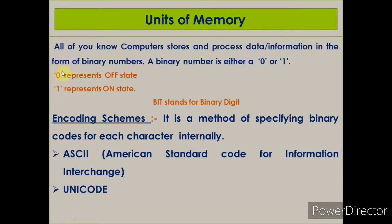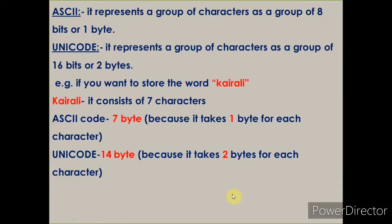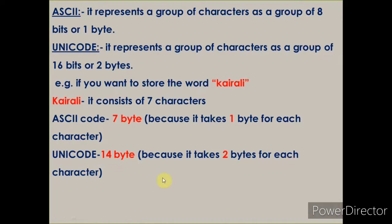Zero or one is known as a bit, which stands for binary digit. If the ASCII encoding scheme is used, it represents each character as a group of 8 bits, or 1 byte — so each character takes 1 byte to store. If Unicode is used, it represents each character as a group of 16 bits, or 2 bytes. For example, the word 'Carely' has 7 characters: in ASCII it takes 7 bytes (1 byte per character), but in Unicode it takes 14 bytes (2 bytes per character).